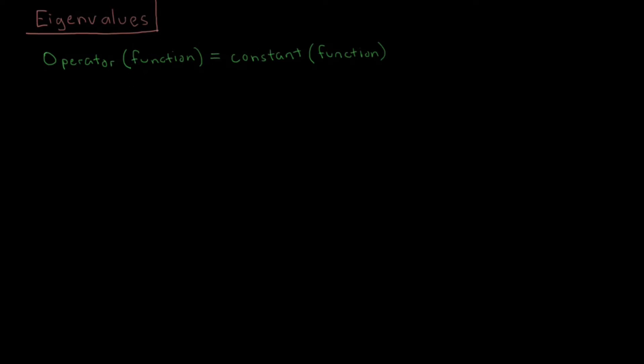So writing this in mathematical terms, let's say we have our operator O acting on some function f of x. Then we have some constant, little o,